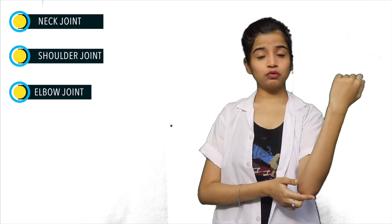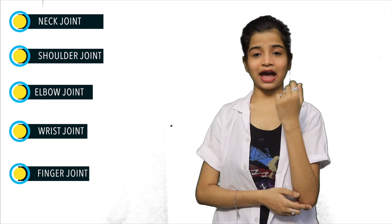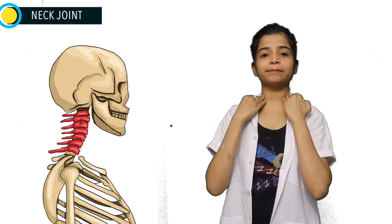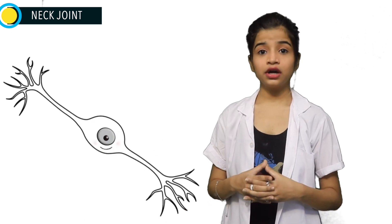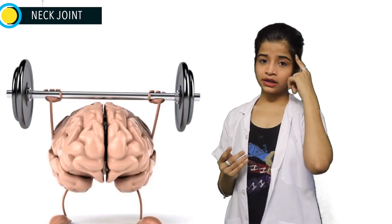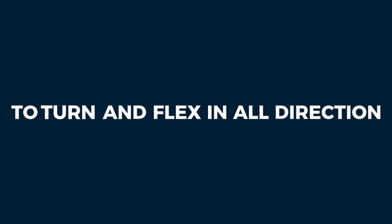I have divided the upper part of the body into five parts: neck joint, shoulder joint, elbow joint, wrist joint, and finger joints. Talking about the neck, it supports the weight of the head and protects the nerves that carry sensory and motor information from the brain down to the rest of the body. The neck is also highly flexible and allows the head to turn and flex in all directions.